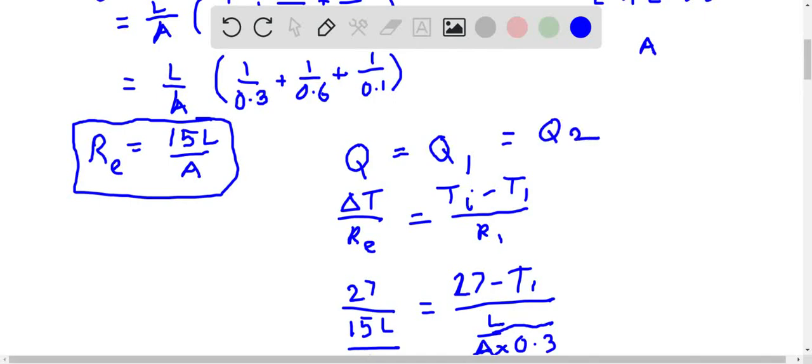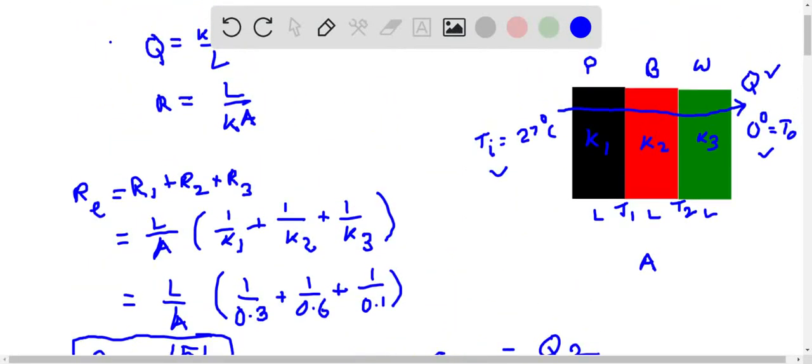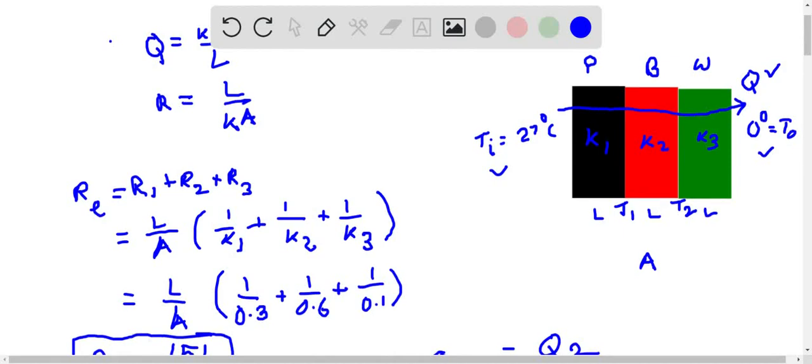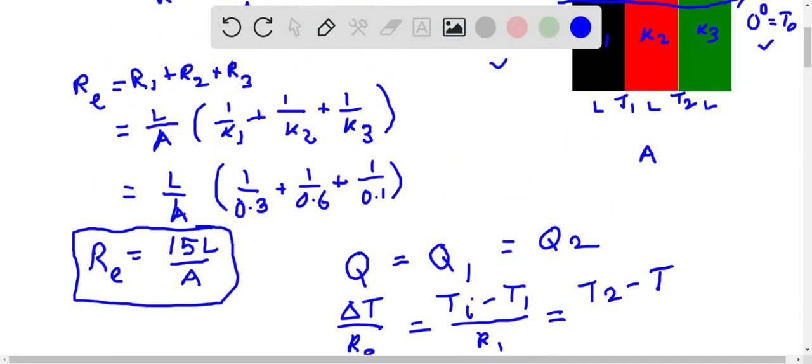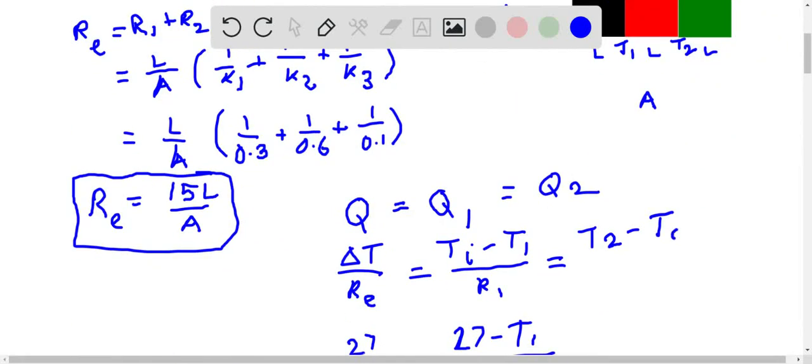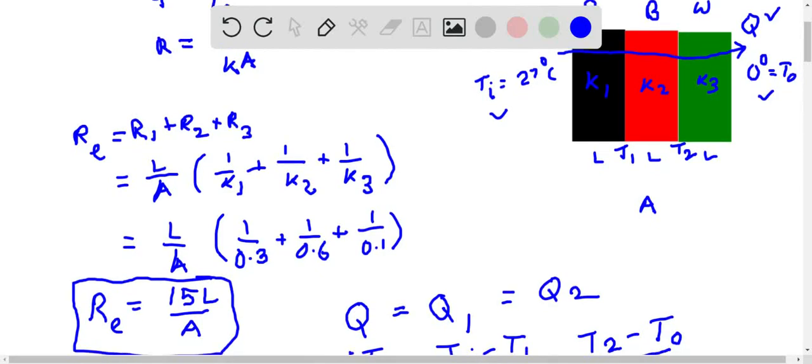Now we can write down the other expression also equal to Q. Let us write the other expression because this will remain constant. Here we will take T2 and the outer temperature, the k3 we calculate. So it will be T2 minus T0 by R3.